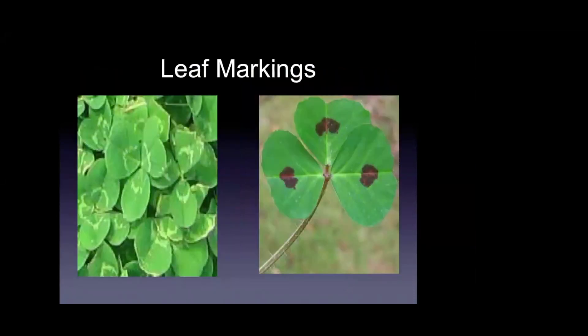Leaf markings are another characteristic to key out broadleaf weeds. White clover has white markings on the base of the leaf, versus spotted burr clover which has a purplish dot in the center of the leaf. This is important because we're looking at two different clover species: white clover is a cool-season perennial, whereas spotted burr clover is a winter annual. Identifying these characteristics helps determine when weeds will emerge and how to plan weed control programs around their life cycle.